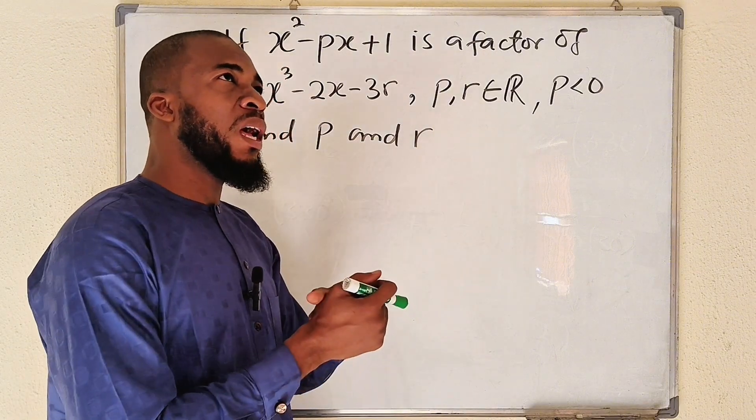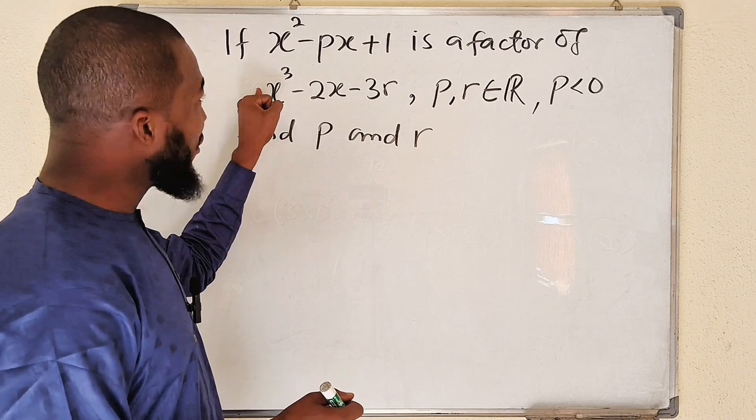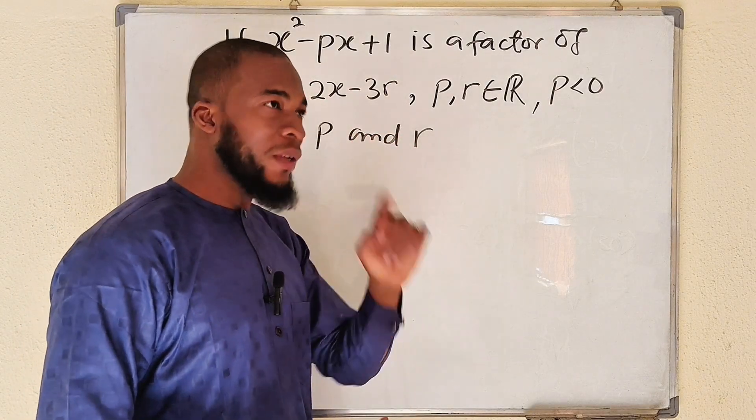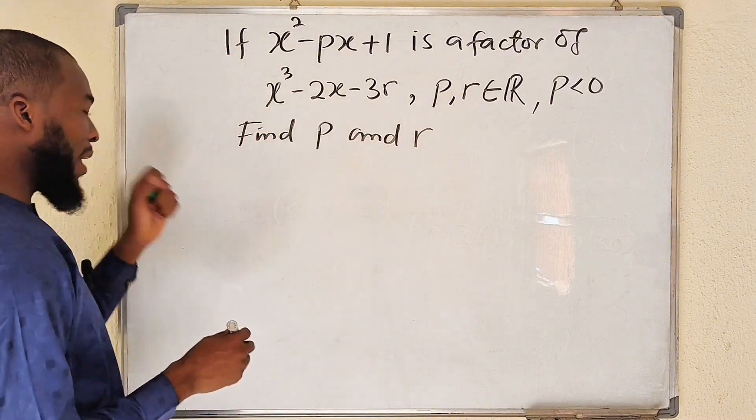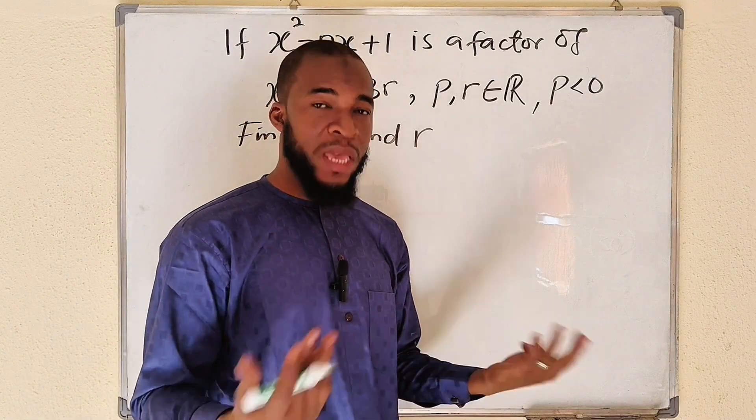So let us come up with a linear function. You can see that the leading coefficient is 1, so even that linear function will have a leading coefficient of 1. So let the other factor, which is linear, be x plus a, where a is also a constant.